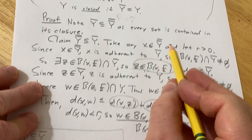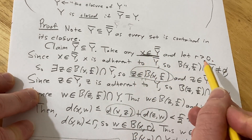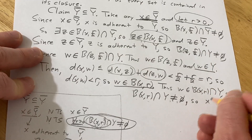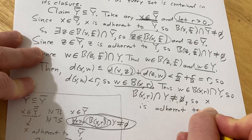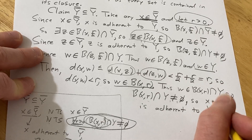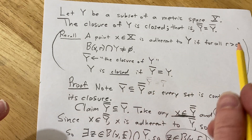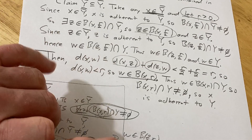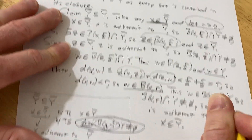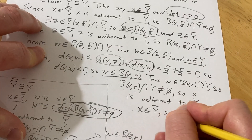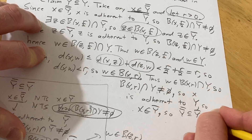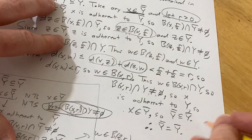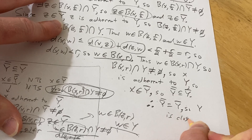Let's do a full recap of what happened. We took an x in closure(closure(Y)), and we showed for every r greater than 0, B(x,r) intersected with Y is not empty. Therefore x is adherent to Y — that's exactly what adherence to Y means. So x is in the closure of Y. We started with x in the closure of the closure, and showed x is in the closure. So closure(closure(Y)) is contained in closure(Y). By double inclusion, closure(closure(Y)) equals closure(Y), and therefore Y-bar is closed.